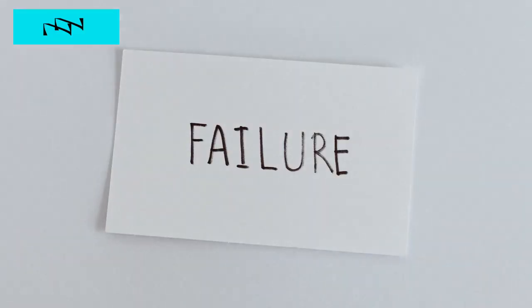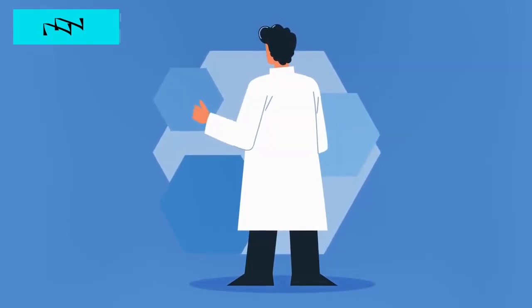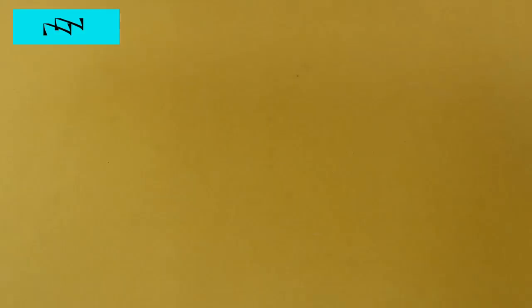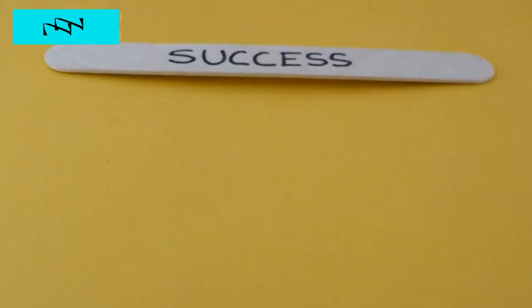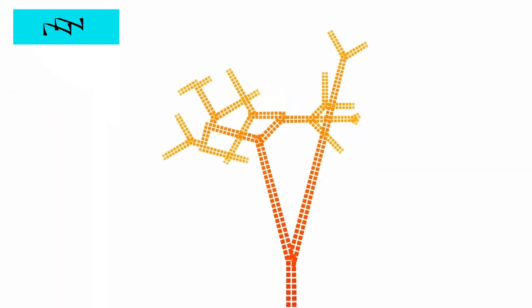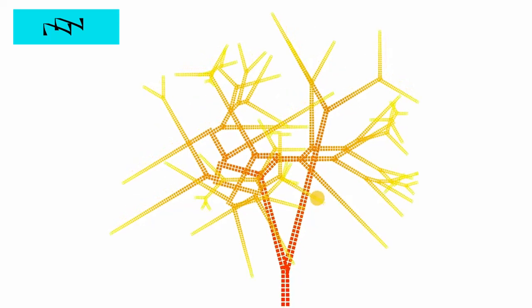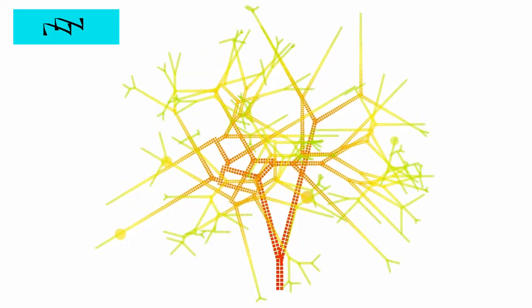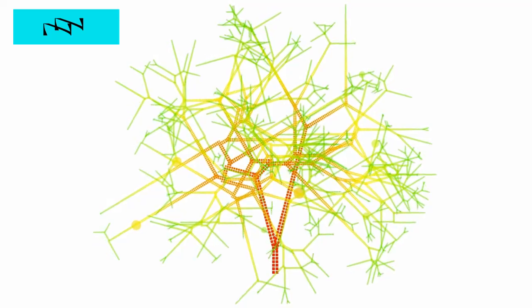The second tip is to cultivate a positive mindset. Living with a chronic condition like diabetes can be challenging, but it's essential to maintain a positive outlook and focus on what you can control. Practice gratitude, celebrate your successes, and learn from your setbacks. Remember that you are not defined by your diagnosis. You are capable of achieving great things despite the challenges you face. Surround yourself with supportive friends, family, and healthcare professionals who believe in your potential and encourage you to pursue your goals.